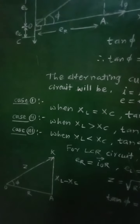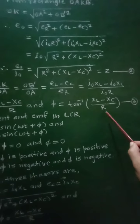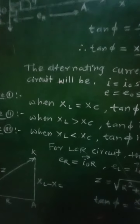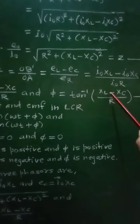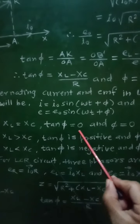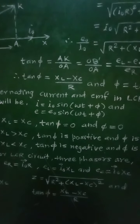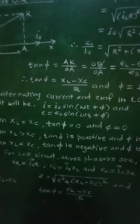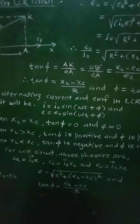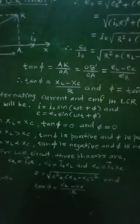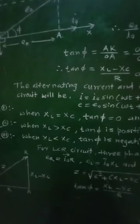Let us now consider three cases from equation number 3, φ = tan⁻¹((XL − XC) / R). First case: when XL = XC. The difference XL − XC becomes 0, so tan φ = 0, and therefore φ = 0. Hence, voltage and current are in the same phase, and the AC circuit is neither inductive nor capacitive — it is purely resistive.